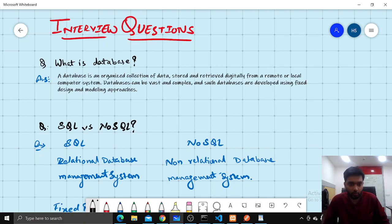So first let's see what is database. Database is an organized collection of data stored and retrieved digitally from a remote or local computer system. Databases can be vast and complex and such databases are developed using fixed design and model approaches.